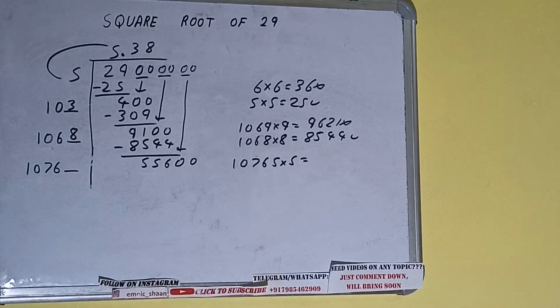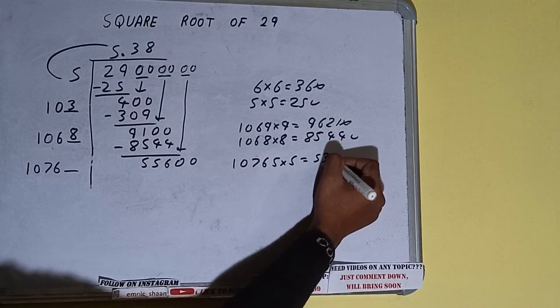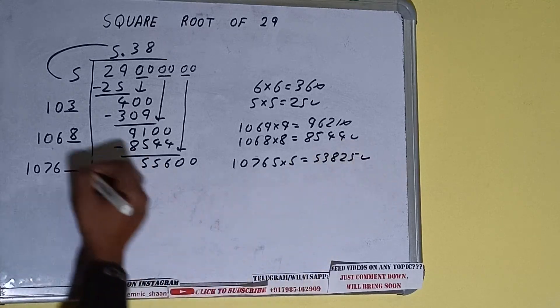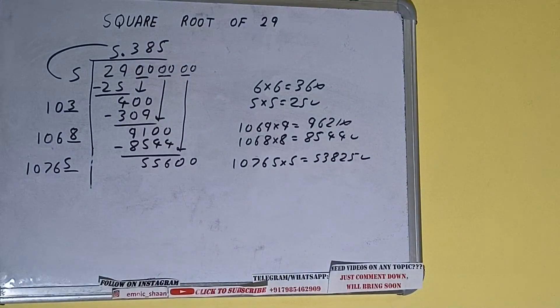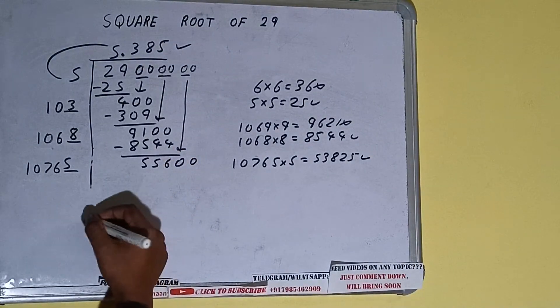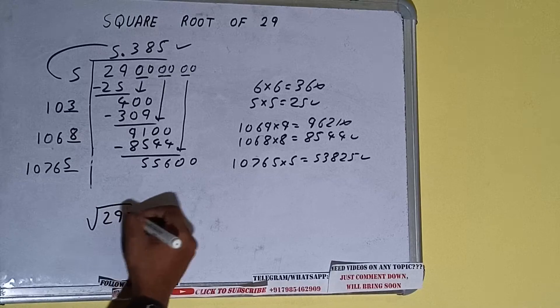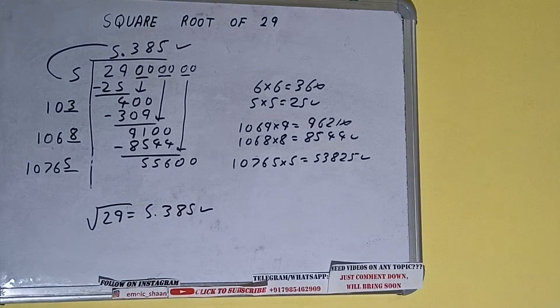we can try. It will be 53,825 which is good to take. So 5 here and 5 here. But we don't need to calculate because we got the answer correct up to 3 decimal places. So square root of 29 is equals to 5.385. That will be the answer. So this is all about square root of 29.